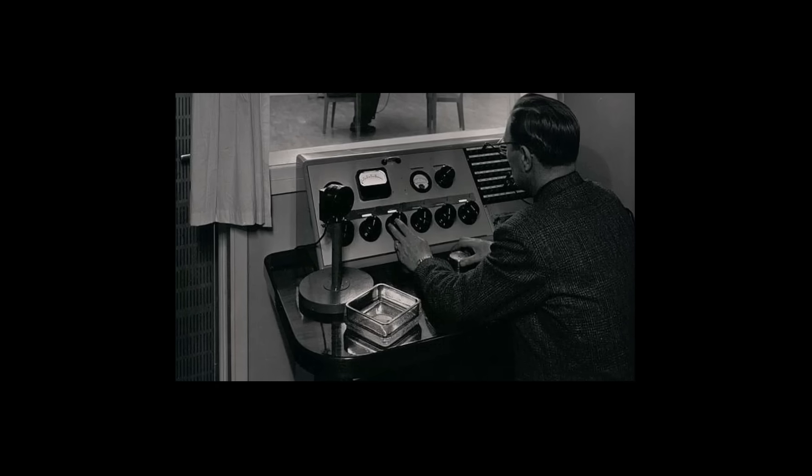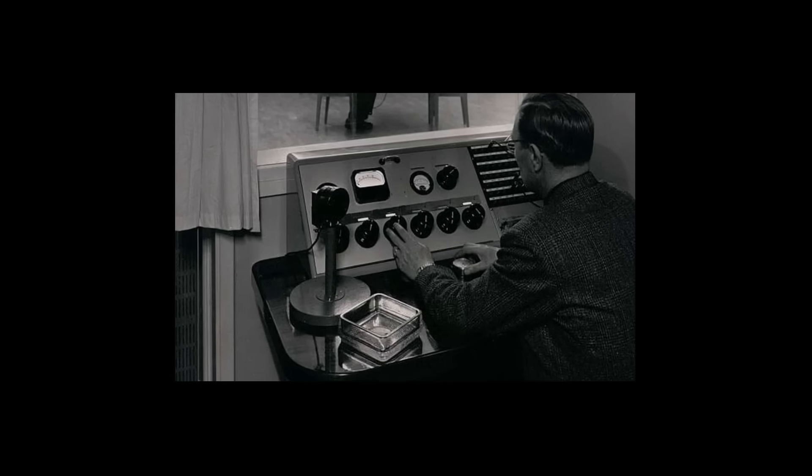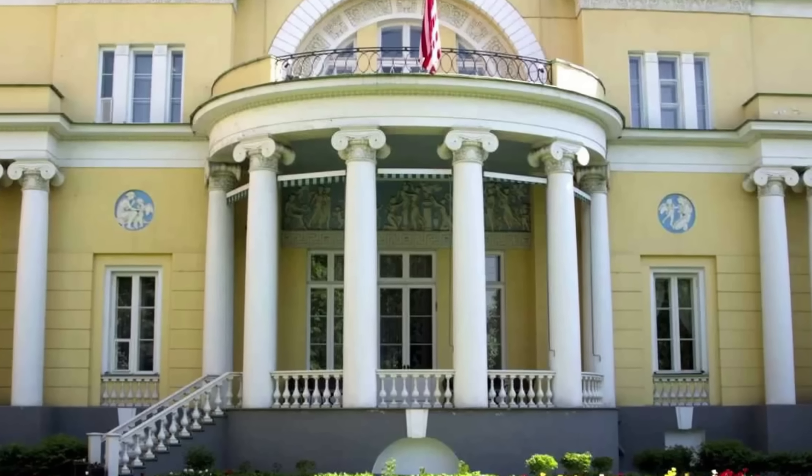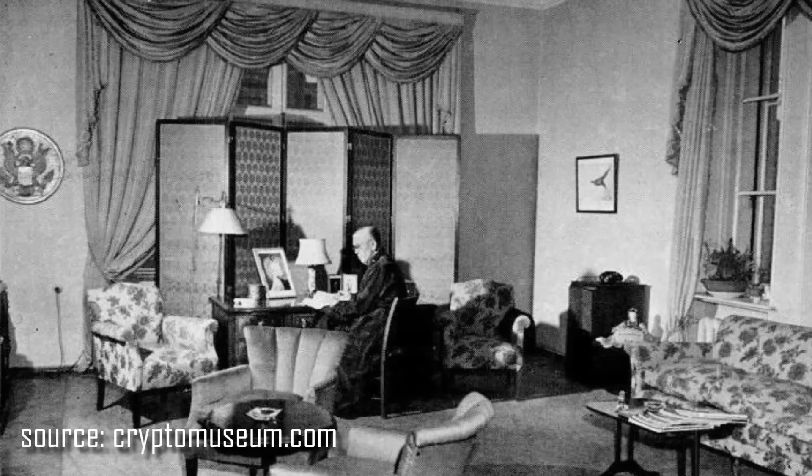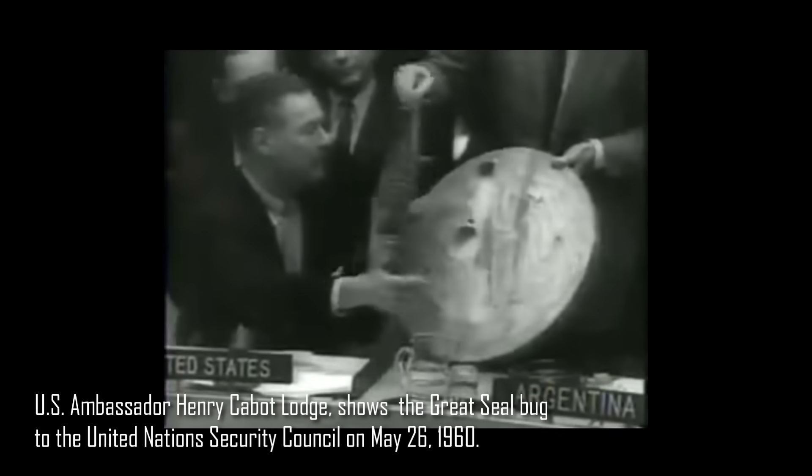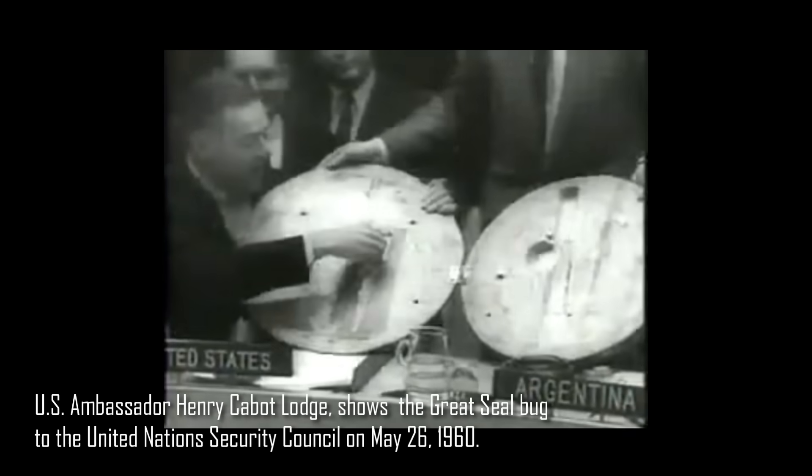In 1952, a British radio operator scanning frequencies accidentally picked up conversations from the U.S. Embassy. Alarmed, American intelligence conducted a deep sweep and finally uncovered the thing inside the great seal plaque.